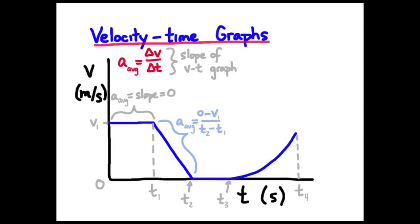For the second segment, delta Y over delta X — that would be zero minus V1 over T2 minus T1 — gives my average acceleration. For the third segment, I'm on a horizontal line, so average acceleration is zero.